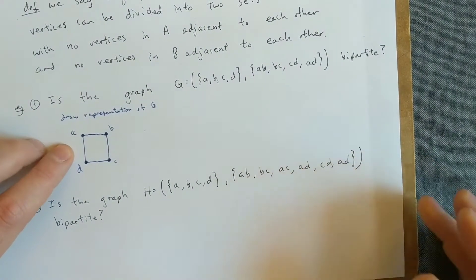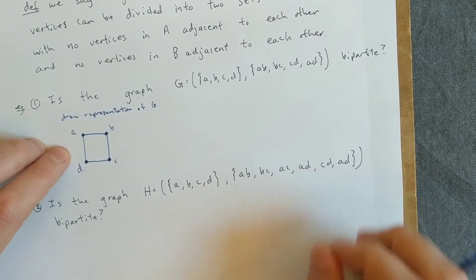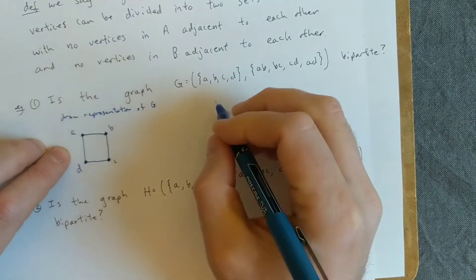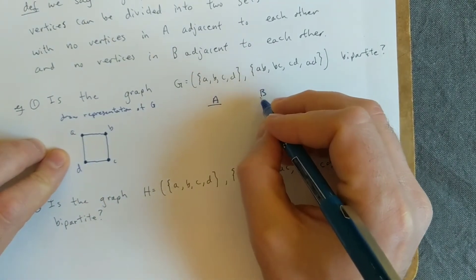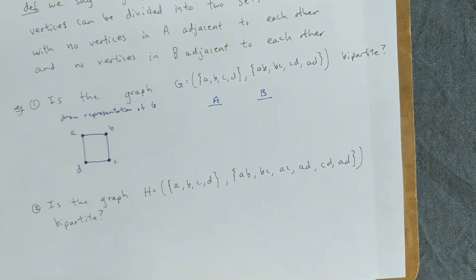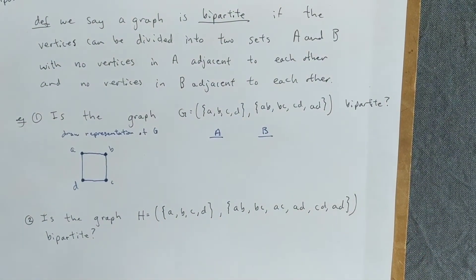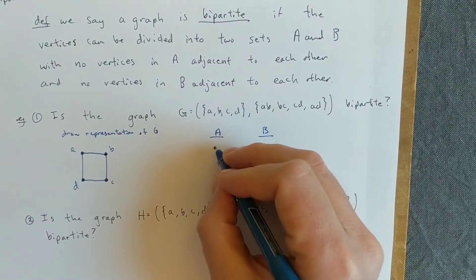So that none of the vertices within the sets are adjacent. I'm going to label one column A and one column B. We usually think about this as splitting between two columns or two rows. It doesn't matter what goes in A and what goes in B, so I'm going to start with A here.